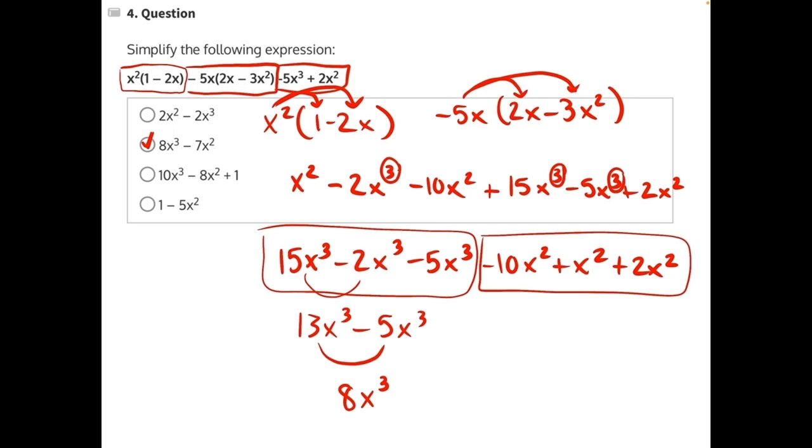Here, we have a negative 10 plus 1, which would give us negative 9 plus 2x squared. Negative 9 plus a positive 2, adding a negative is like subtracting a positive. So this would actually be negative 7x squared.